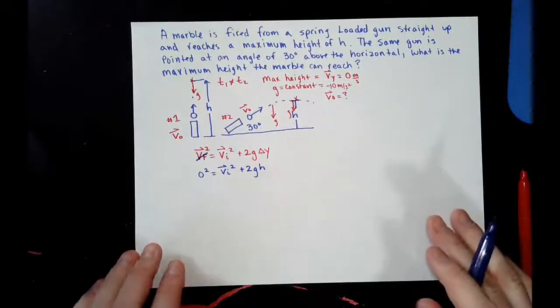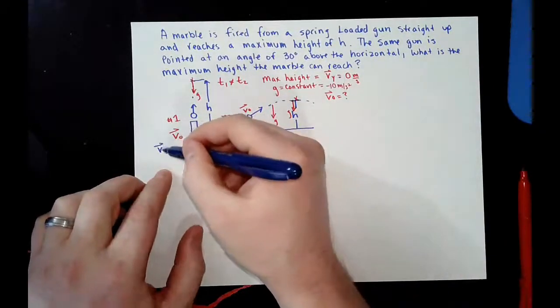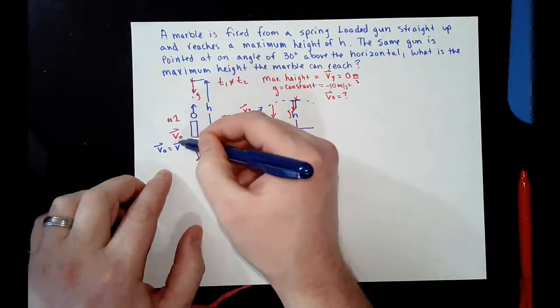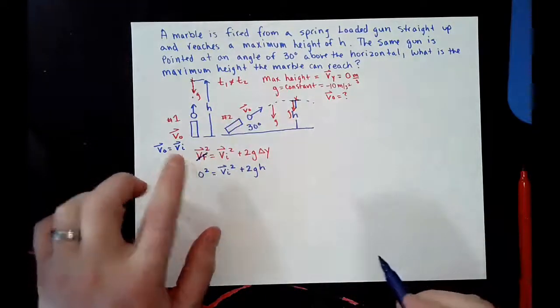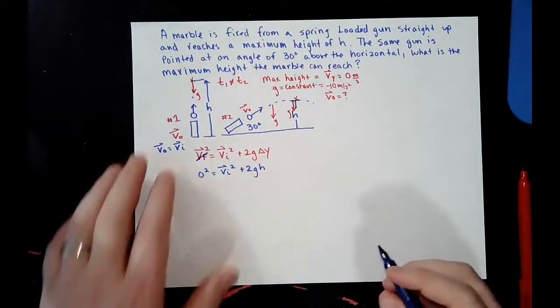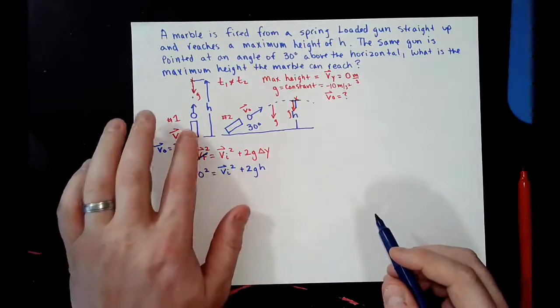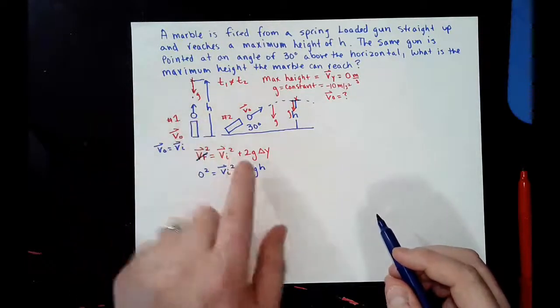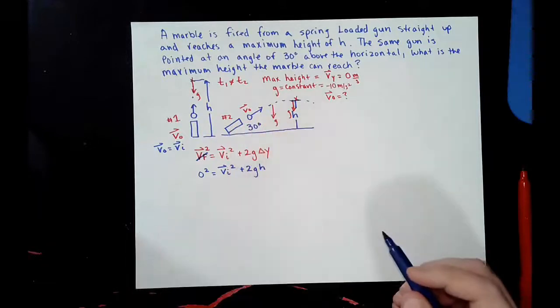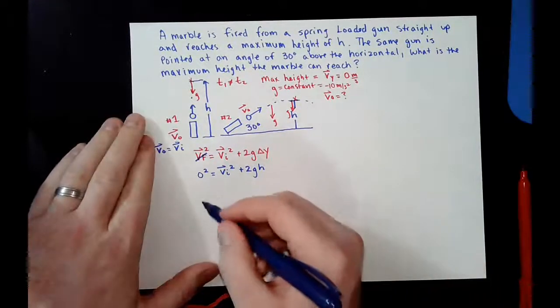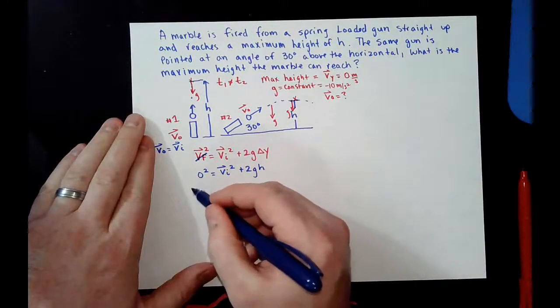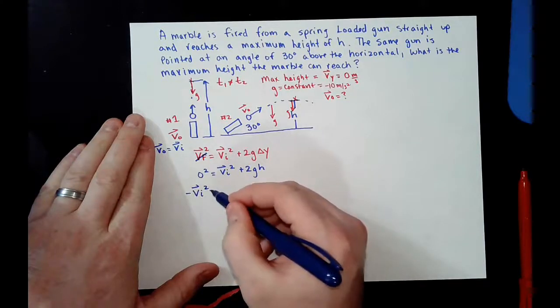So, this v naught right here is the same thing as vi. Forgive me. I'm trying to use two different notations here. So, I need to solve for this velocity initial because if I know this velocity initial here, then I know the velocity initial in this situation. So, solving for that gives me this: Negative vi squared equals 2gh.